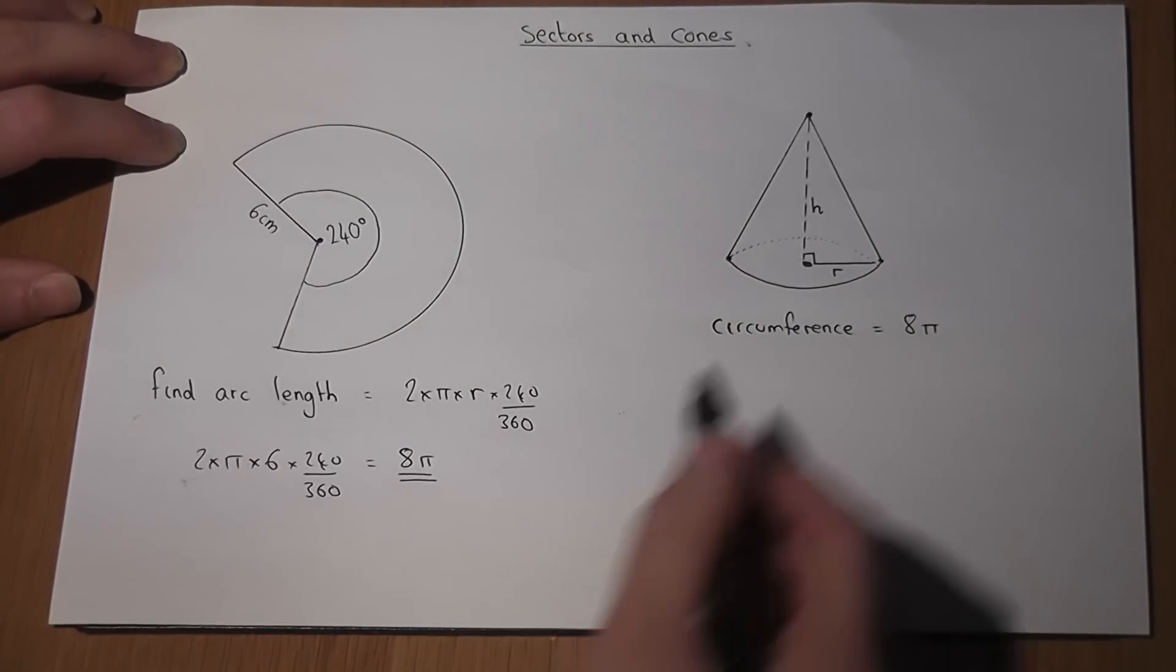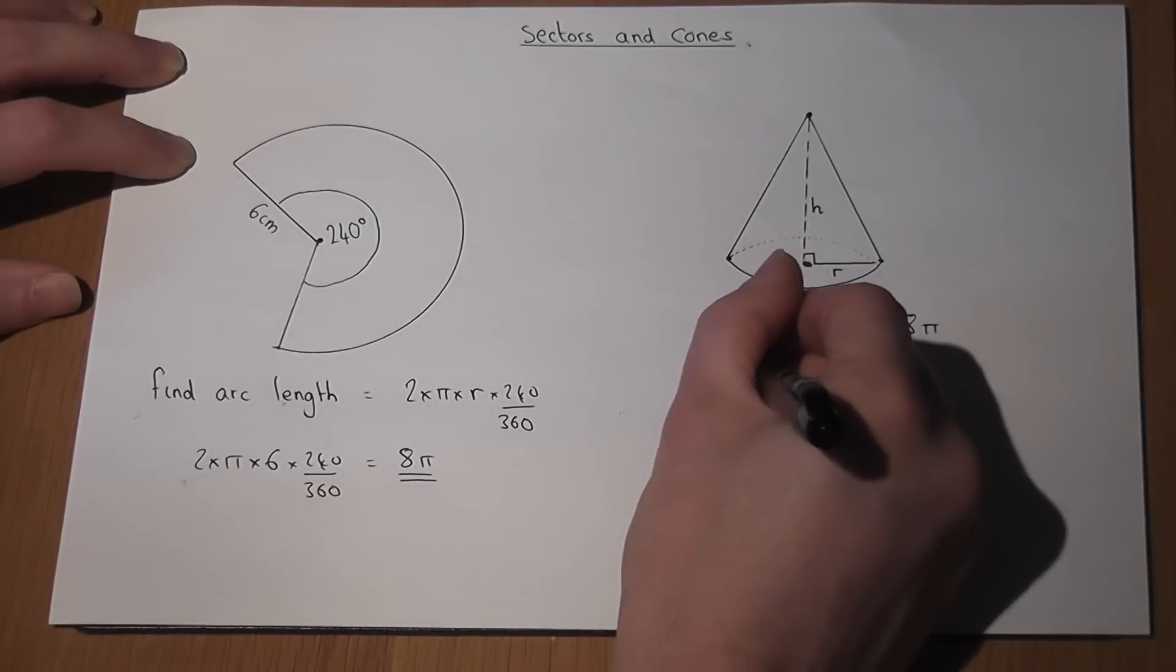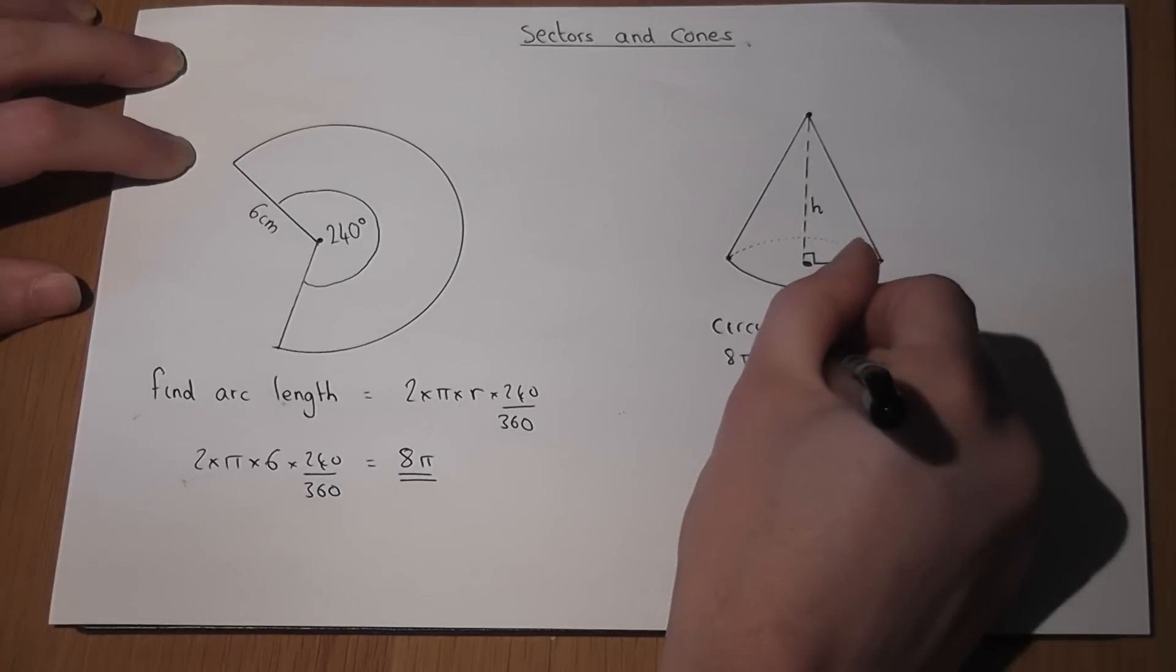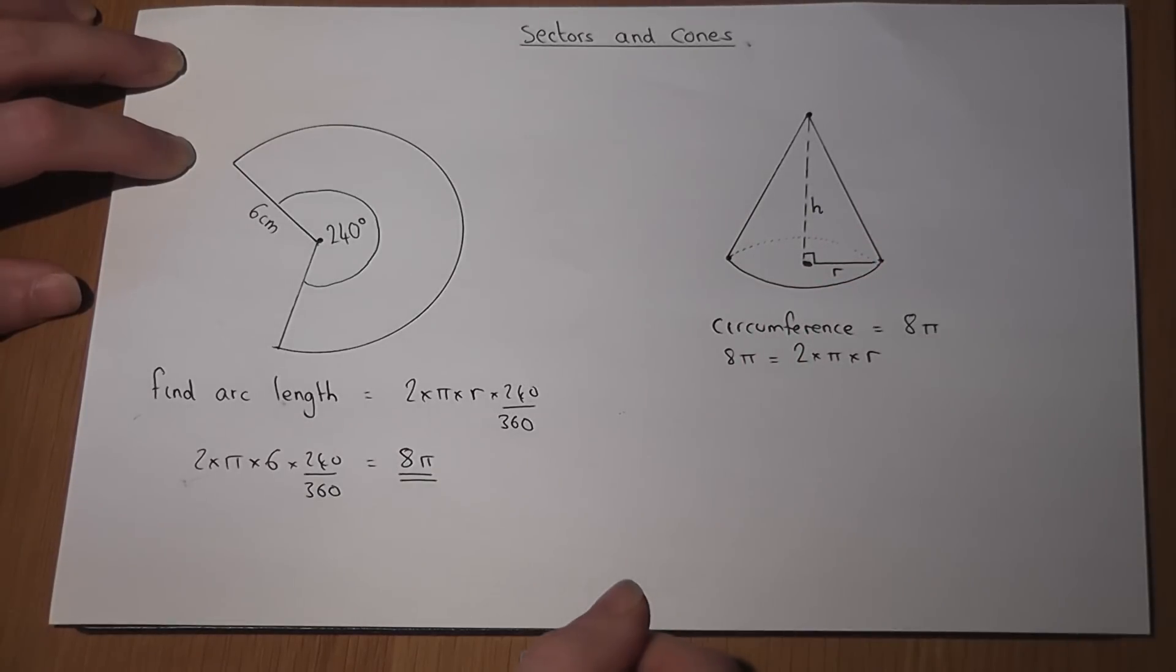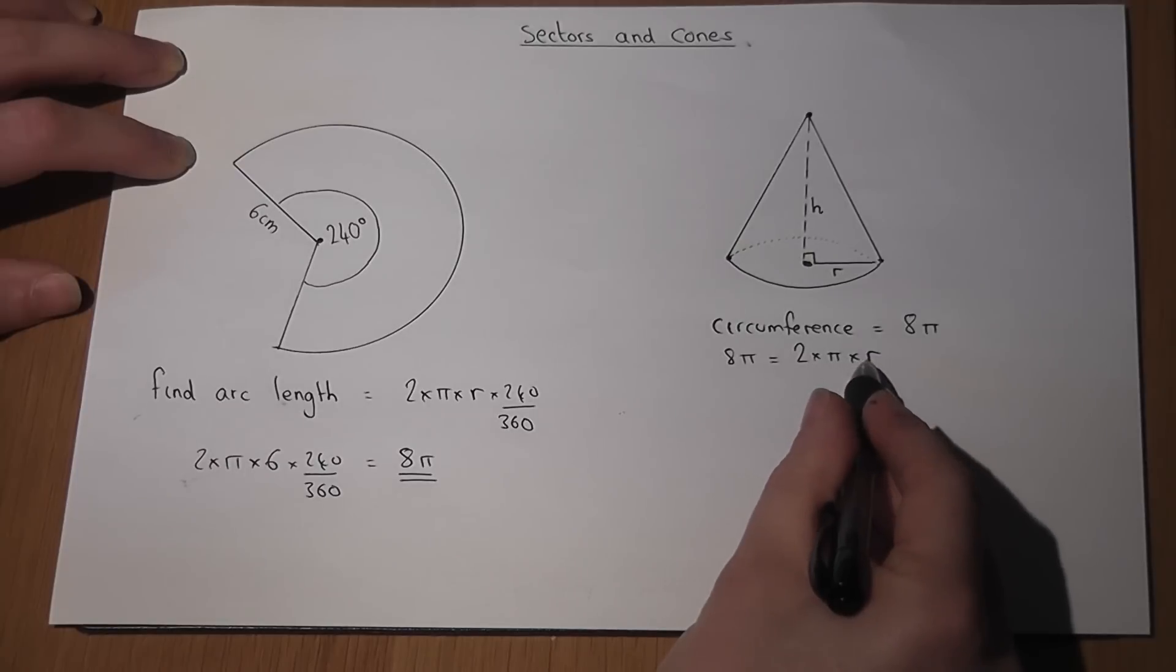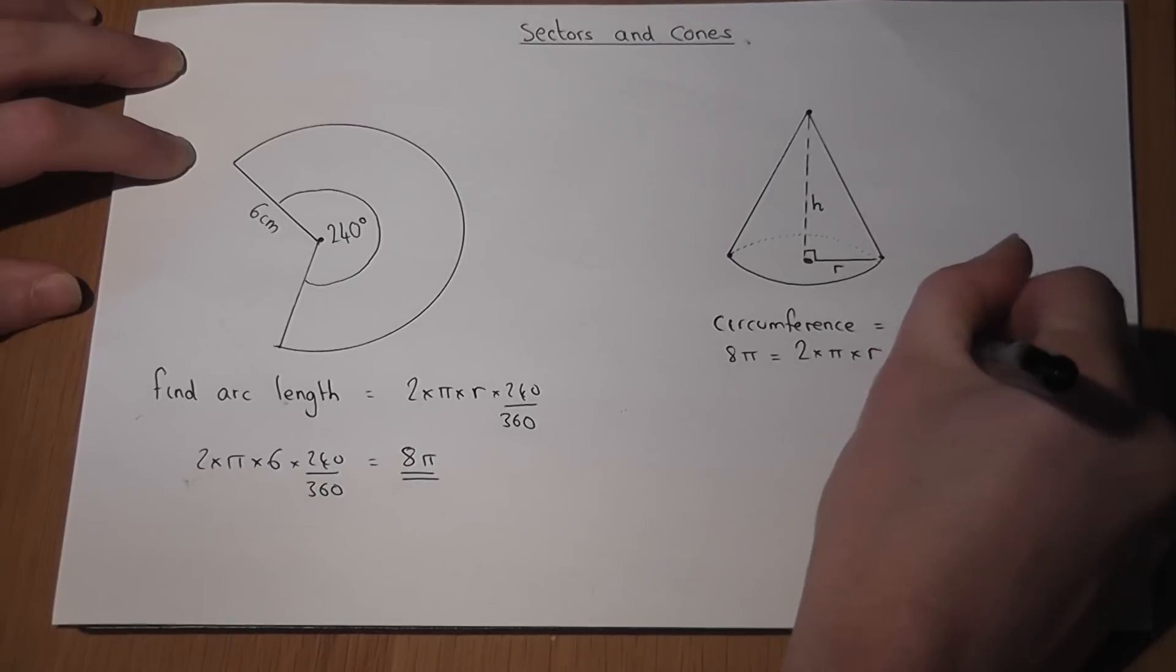So I can therefore find the radius of this circle. Because circumference, in this case 8 pi, is given by 2 times pi times r. It's very obvious from this that r must equal 4, because 2 times 4 is 8, and 8 times pi is 8 pi. So r equals 4 centimeters.